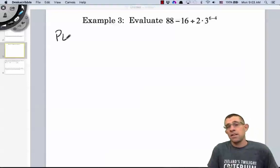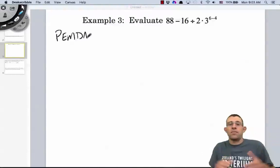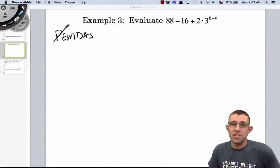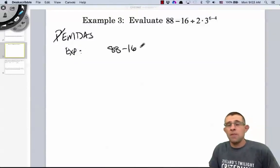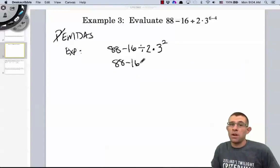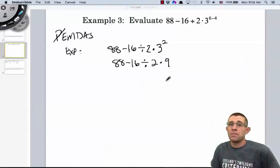All right, and finally, in example 3, actually, I didn't say finally. In example 3, we have another opportunity to practice PEMDAS. So we see that we have 88 minus 16 divided by 2 times 3 to the quantity, or to the power of 6 minus 4. We'll start off by handling that exponents. So we rewrite that as 88 minus 16 divided by 2 times 9.